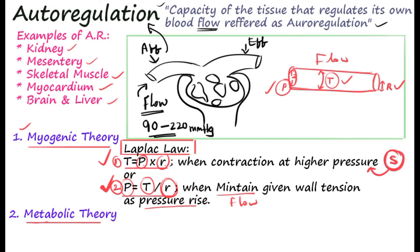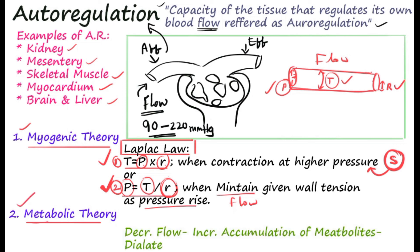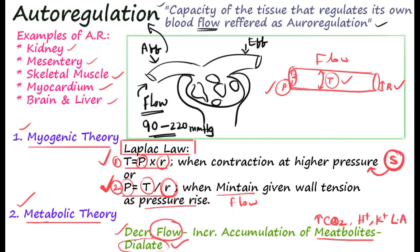The metabolic theory of autoregulation works as follows: decreasing blood flow leads to the accumulation of metabolites. These metabolites include carbon dioxide, increasing H+ ion concentration, increasing potassium ions, and lactic acid or lactate. When these metabolites accumulate in the blood vessel, they bring about dilation. The increasing metabolites dilate the blood vessel in order to maintain constant flow. This is called the metabolic theory.